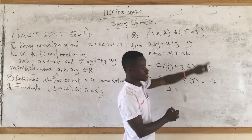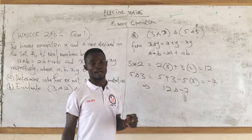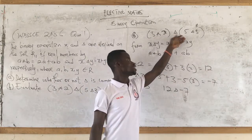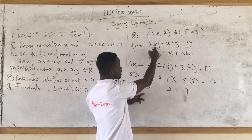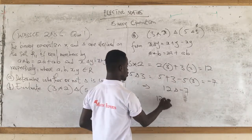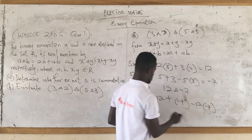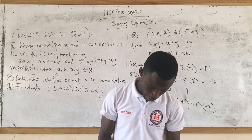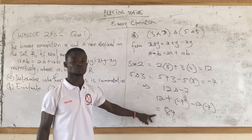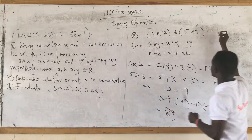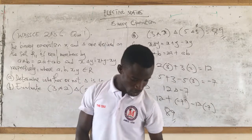Now we are left with 12 delta negative 7. Applying the delta operation, this is 12 plus negative 7 minus 12 multiplied by negative 7. The final answer is 89. So evaluating the whole expression gives us 89. Let's look at the next question.